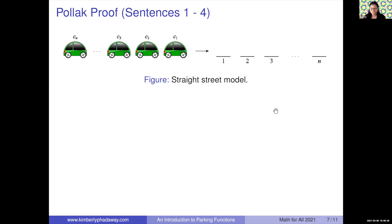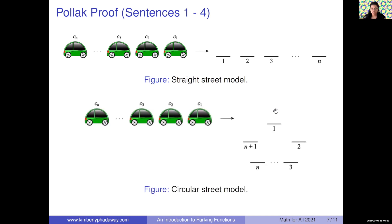The first four sentences say the following: consider a straight street with n spots and n cars; add an n plus 1 spot; put the parking spots in a circle; and allow the cars to park in all of those spots, including the n plus 1 spot. Then, a preference vector alpha is a parking function if and only if the empty spot is the n plus 1 spot. We can see this because on the linear street, the cars park in the first n spots, so on the circular street the n plus 1 spot is open. Conversely, if the n plus 1 spot is open, the cars parked in the first n spots, so alpha is a parking function.